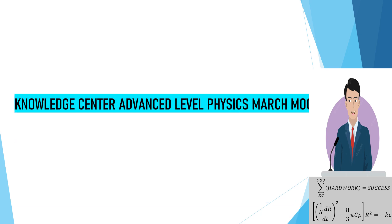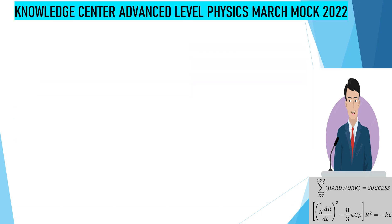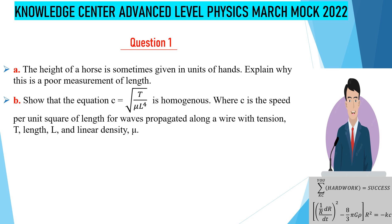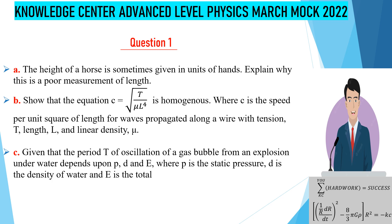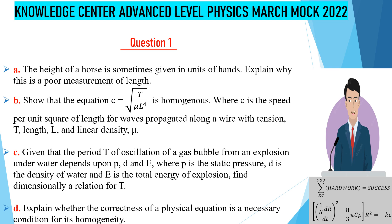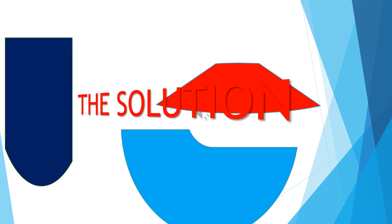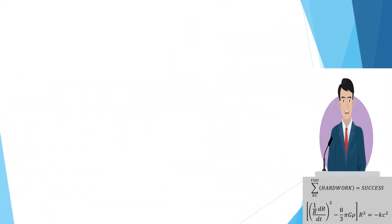Hello guys, today we are going to be looking at a problem in the Knowledge Center Physics past paper, 2022, question number one. Part A: the height of a horse is sometimes given the unit of 'hands' — explain why it is a poor measurement of length. Part B: show that the equation for speed c per unit square of length is propagated along a wire with tension T, length L, and linear density mu. Part C: given that the period of oscillation of a gas bubble from an explosion underwater depends upon p, d, and E — where p is static pressure, d is density of water, and E is total energy of explosion — find the dimensional relation for T. Part D: explain whether the correctness of a physical equation is a necessary condition for its homogeneity.